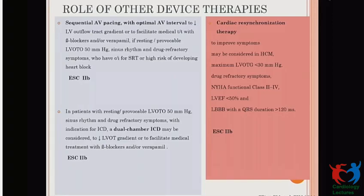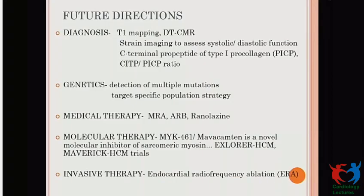Future directions include T1 mapping and diffusion tensor cardiac MR to delineate different etiologies, genetics to target specific populations and detect a higher percentage of patients, medical therapy with MRA, ARBs, and ranolazine — especially in patients with angina — and molecular therapy with mavacamten, which is an inhibitor of sarcomeric myosin. Trials are ongoing to see whether it can be effective in reducing LVOT gradient or LV mass. Invasive therapy including endocardial radiofrequency ablation in patients where septal ablation cannot be done due to unfavorable coronary anatomy is also being explored.